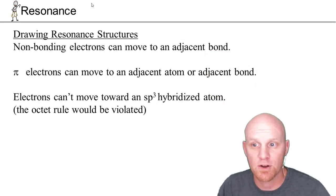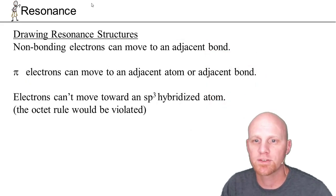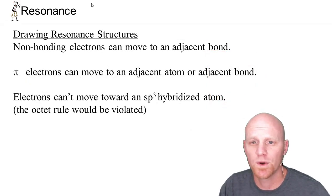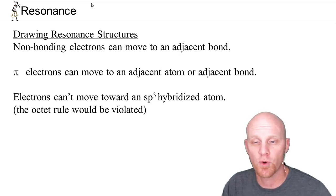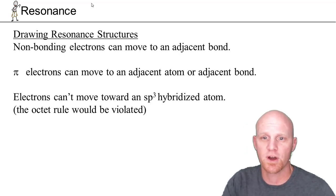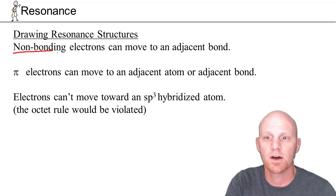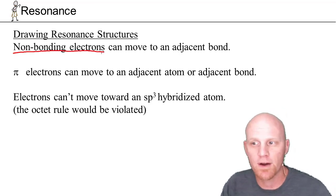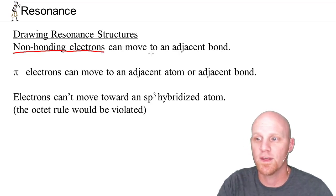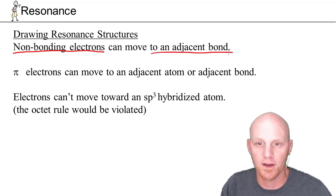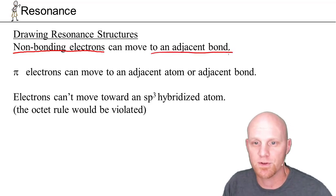Let's talk about drawing resonance structures. When we go to draw them, we need to keep in mind that there are only two sets of electrons we can move to draw the next resonance structure. The first are non-bonding electrons — whether a lone pair or a radical. In this case, they have only one place they can go: to an adjacent bond, no further.